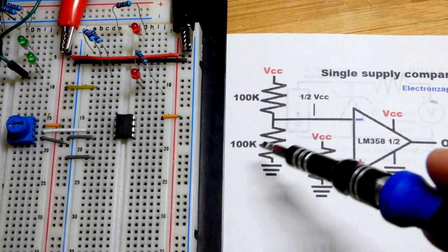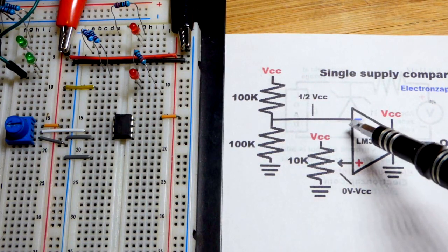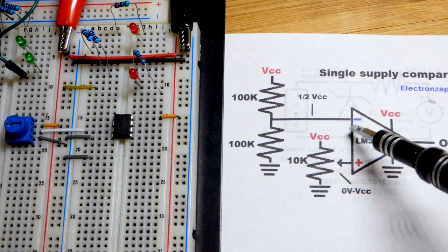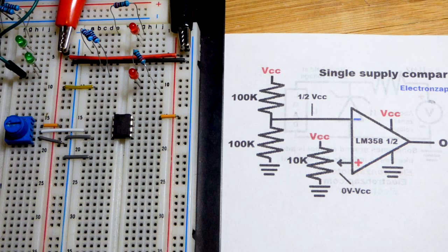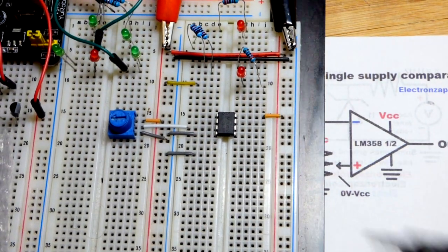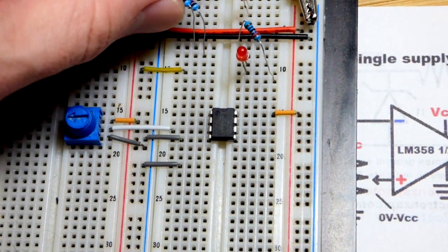And so I'm going to call this the reference voltage. So that will be the voltage that is set. It's not going to change. And the other voltage will be in relationship to it. So we put that to the inverting input. And I wrote 100k on the resistors, but I grabbed 10k. It doesn't matter.